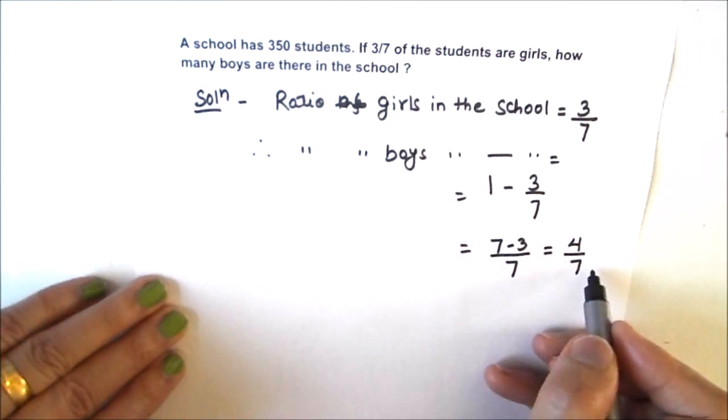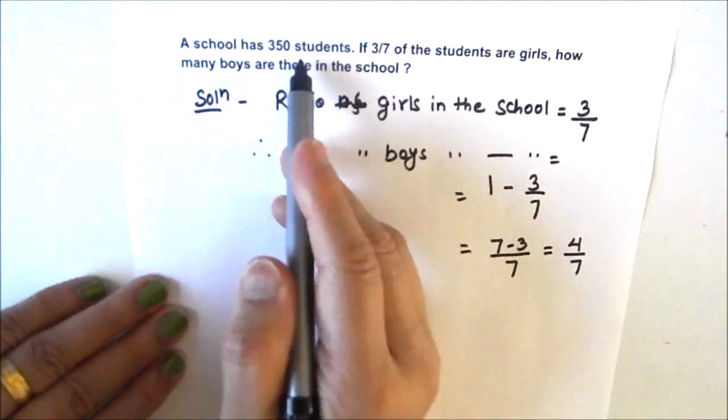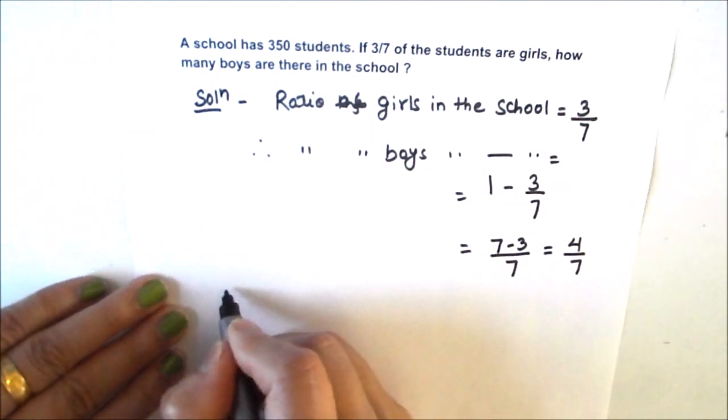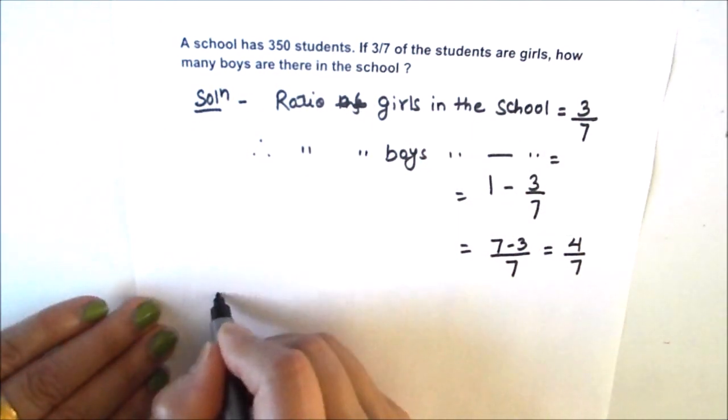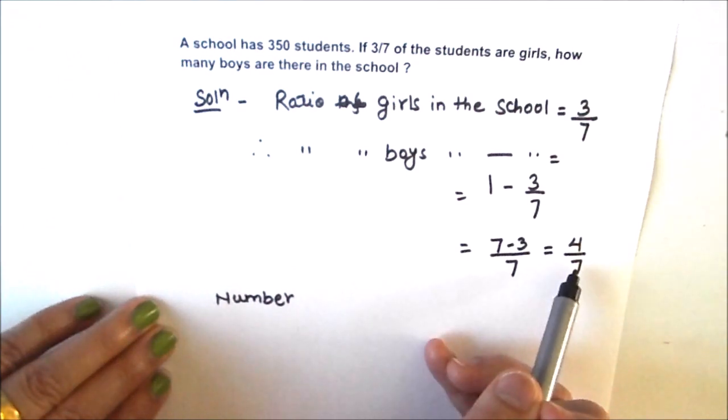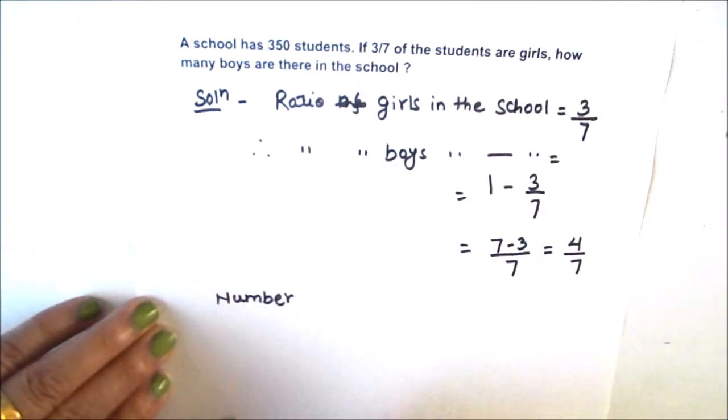So we got the fraction of boys in the school and we know the total number of students in the school. For finding the number of boys in the school, we need to multiply this fraction of boys with the total number of students in the school.